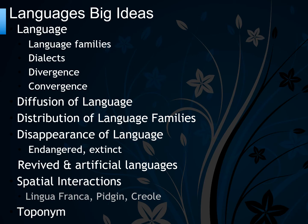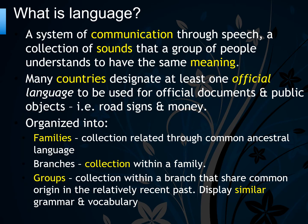We'll also cover spatial interactions and toponyms. Language is a system of communication through speech — a collection of sounds that a group of people understand to have the same meaning. Many countries designate at least one official language for official documents and public objects, like road signs and money.